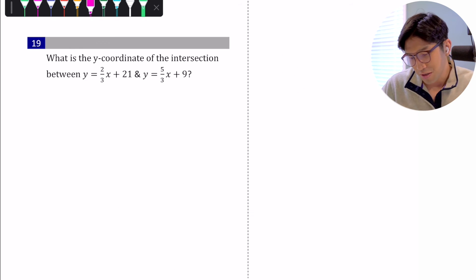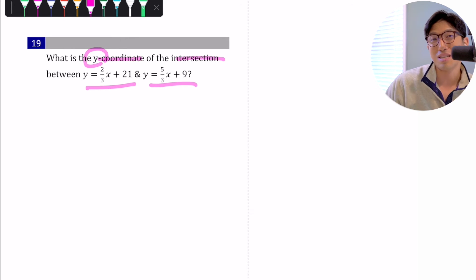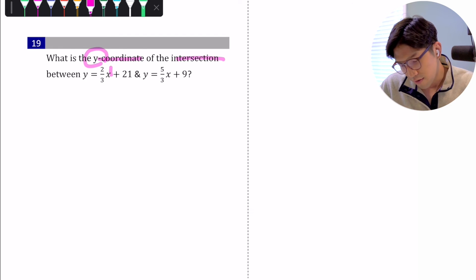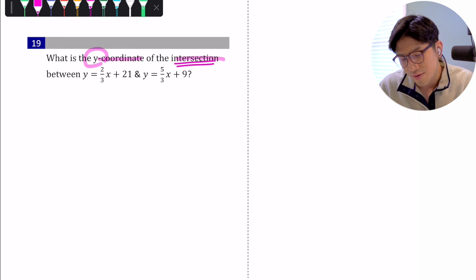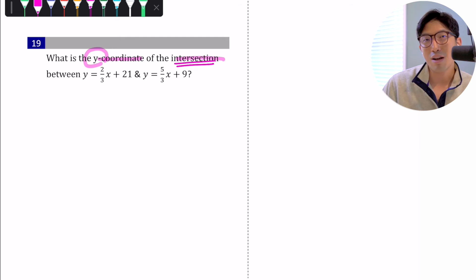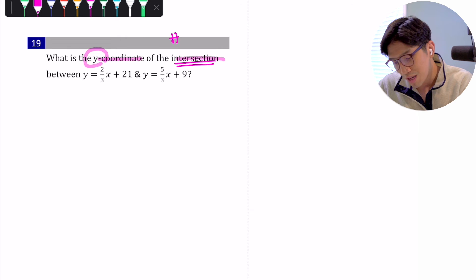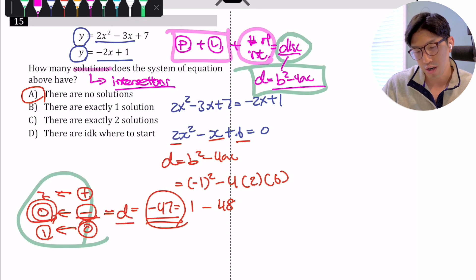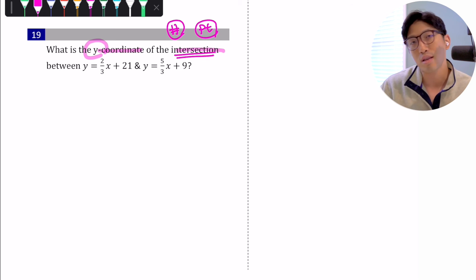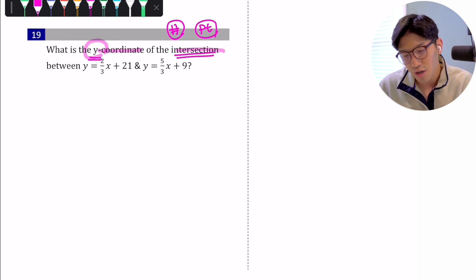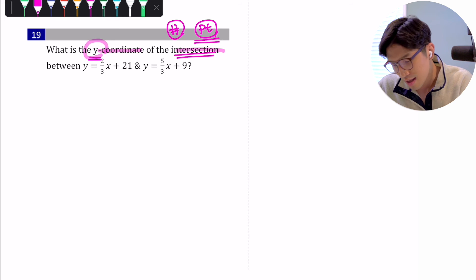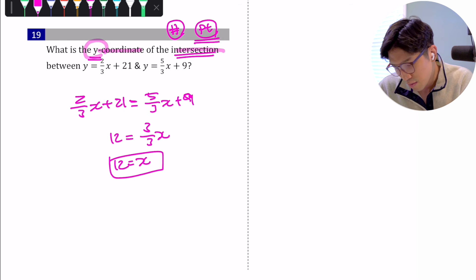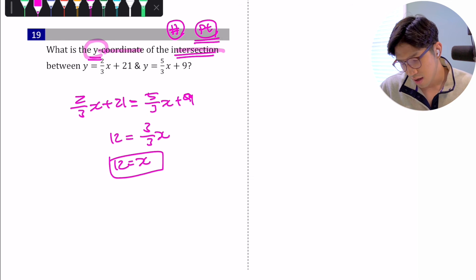The fourth question type asks for the y-coordinate of the intersection between two equations — two lines, since the highest exponent is 1 in both. There are two types of intersection questions on the SAT: finding the number of intersections, like we just did, or finding the exact point of intersection. Here we're looking for the exact y-coordinate, so we set the equations equal to each other: two-thirds x plus 21 equals five-thirds x plus 9. Once we solve for x, we plug it back in to find the y value.